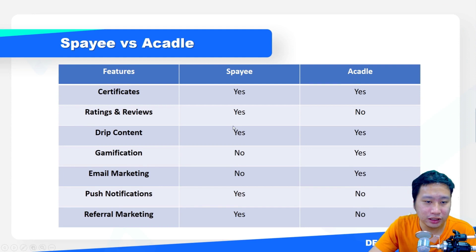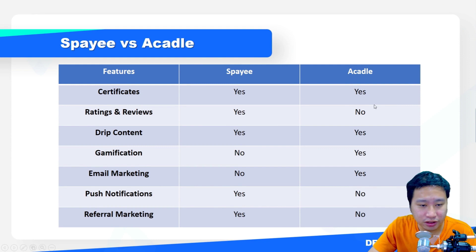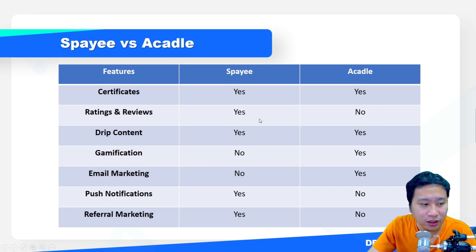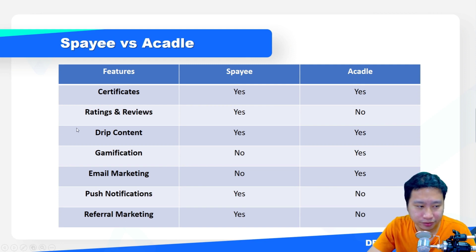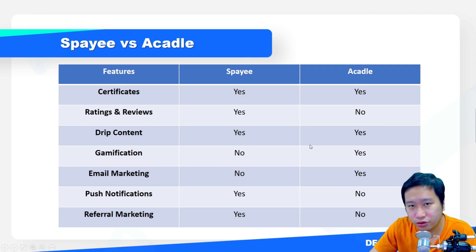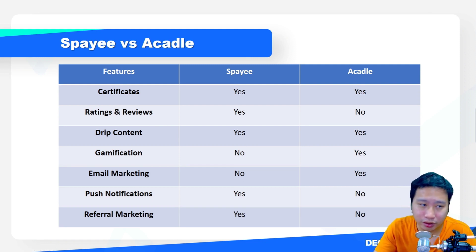Certificates are available on both platforms. I made a mistake in my notes — Acadle does ask for ratings, so ratings are available on both. Whenever you finish a course, you can ask for a rating or review on both platforms. Drip content is also available on both, so you can schedule, for example, week one shows lesson one, week two shows lesson two, and so on.